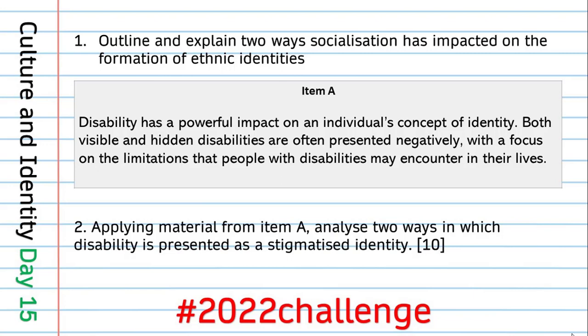Item A says: disability has a powerful impact on an individual's concept of identity. Both visible and hidden disabilities are often presented negatively, with a focus on the limitations that people with disabilities may encounter in their lives. You need to pick a couple of hooks out of there. In my answer I picked out 'presented negatively' and 'limitations' as ways in which disability is a stigmatized identity.